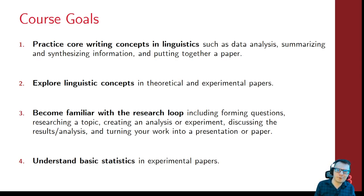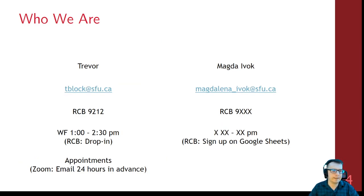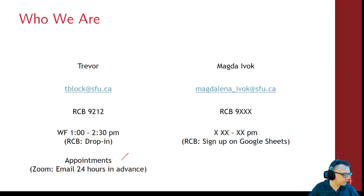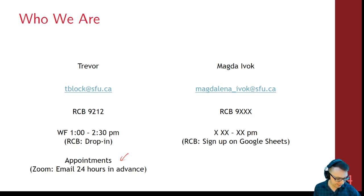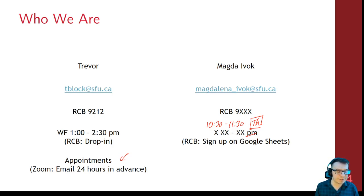We'll also do some basic statistical stuff — it's a Q course, and it's not something explicitly covered in any other course in the department, so what better way to do it than in a 282? I'm Trevor. I have office hours at RCB 9212 on Wednesdays and Fridays after class at 1 o'clock for an hour and a half. You can drop in any time, or if those times don't work, email me 24 hours in advance and we can meet through Zoom. Our TA is Magda; at the time of recording, her hours are tentatively 10:30 to 11:30 on Thursdays — please check Canvas for updates.